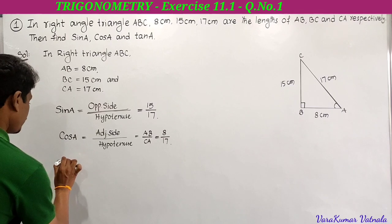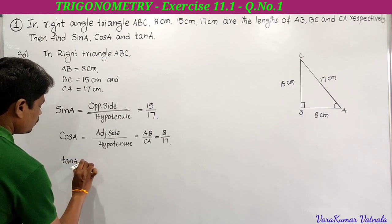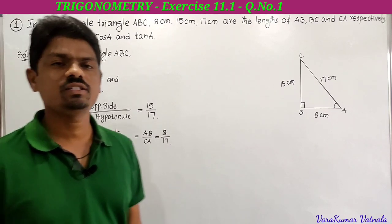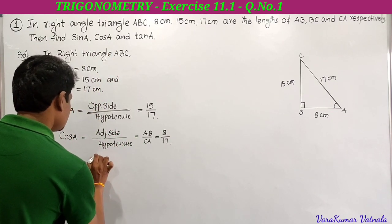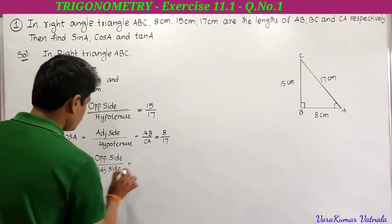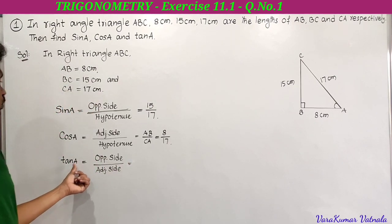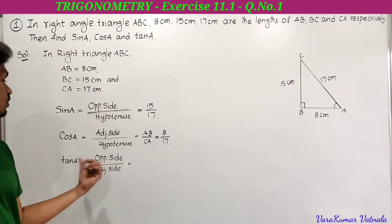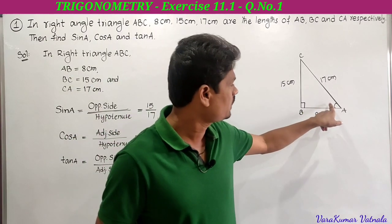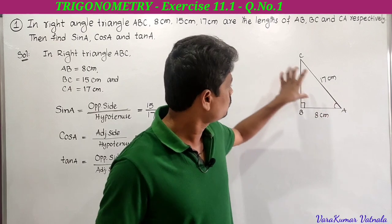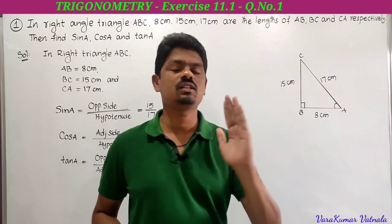AB is 8 centimeters and CA is 17, so cos A equals 8 by 17. He is also asking to find tan A. Tan A equals opposite side by adjacent side. You have to observe the angle carefully to select the correct opposite side.